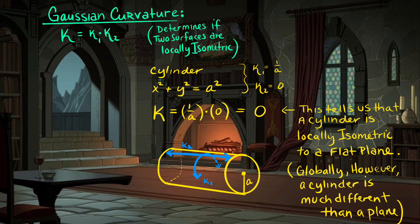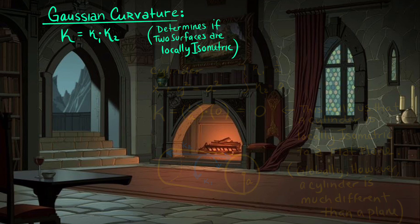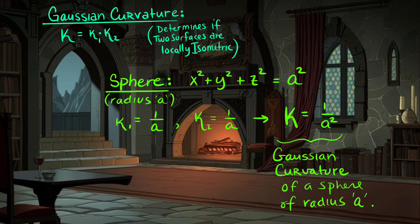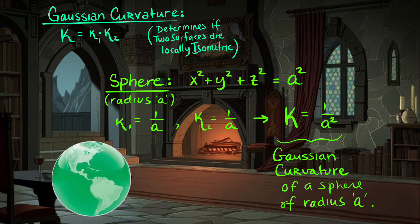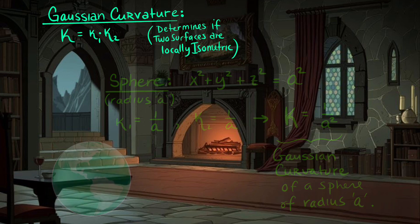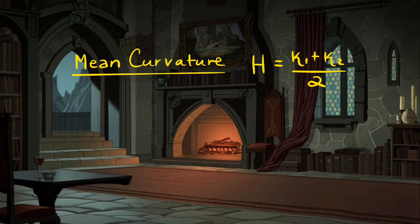A cylinder is globally different from a plane even though its Gaussian curvature is zero. A sphere has curvature 1/a in both principal directions, so its Gaussian curvature is 1/a². You can also define the mean curvature of a surface by adding the two principal curvatures and dividing by 2.